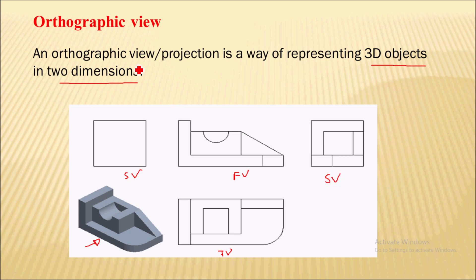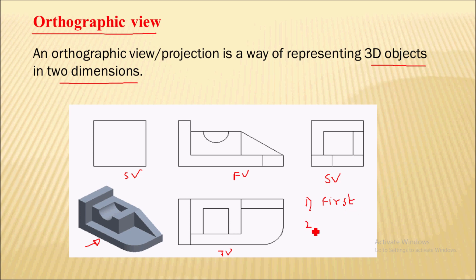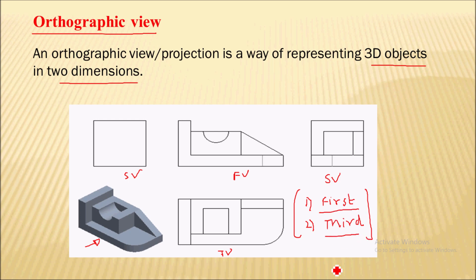There are two ways of representing orthographic views in engineering drawing: the first angle projection method and the third angle projection method. Orthographic views are shown using either of these two projection methods.